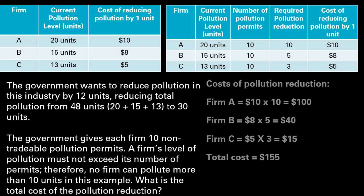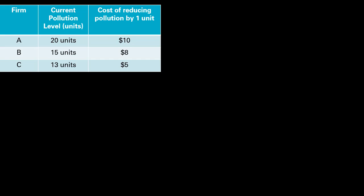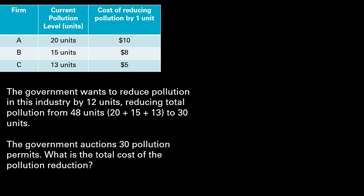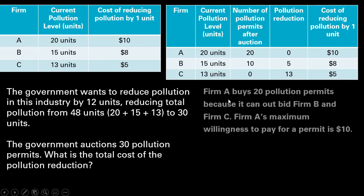Let's do another example. We've got the same industry. The government wants to reduce pollution once again by 12 units, reducing pollution from 48 units to 30 units. But this time the government auctions 30 pollution permits. What is the total cost of the pollution reduction? Firm A is going to buy 20 pollution permits because it can outbid the other firms — firm A's maximum willingness to pay for a permit is $10, while firm B would pay at most $8 and firm C $5.